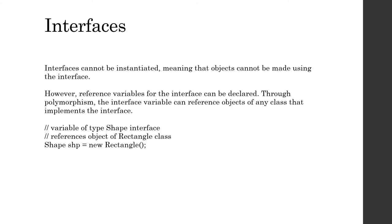One last conceptual point: interfaces cannot be instantiated, meaning objects cannot be made directly from an interface. However, you can declare reference variables of the interface type, and then through polymorphism, construct objects of the classes that implement that interface and have those reference variables point to those objects. This is very similar to what you see with abstract classes, where you construct a subclass object and use the abstract class reference variable.